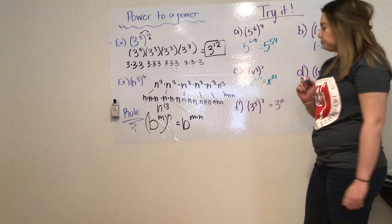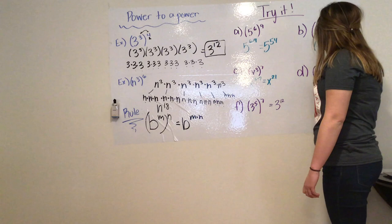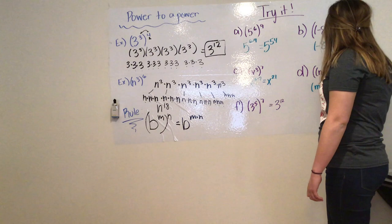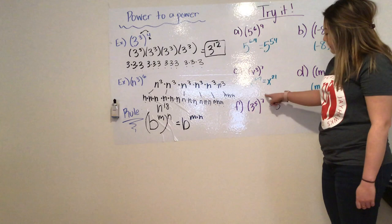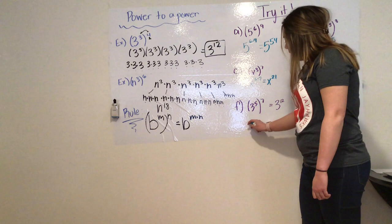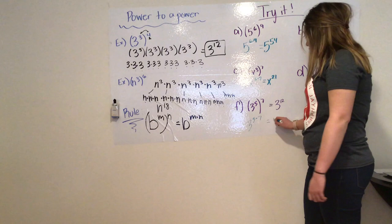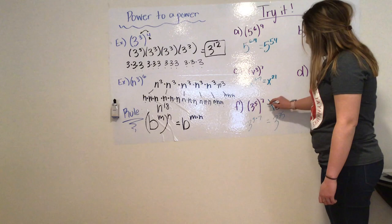Over here, I have m plus 1 to the power of 20, because I'm multiplying my powers. Now, this last one, you're trying it, it's determining is 3 to the power of 5 raised to the power of 7, is that equal to 3 to the 12th? Well, since it's power to a power, it's 3 to the power of 5 times 7, which in fact gives me 3 to the power of 35. So, this is not equal.